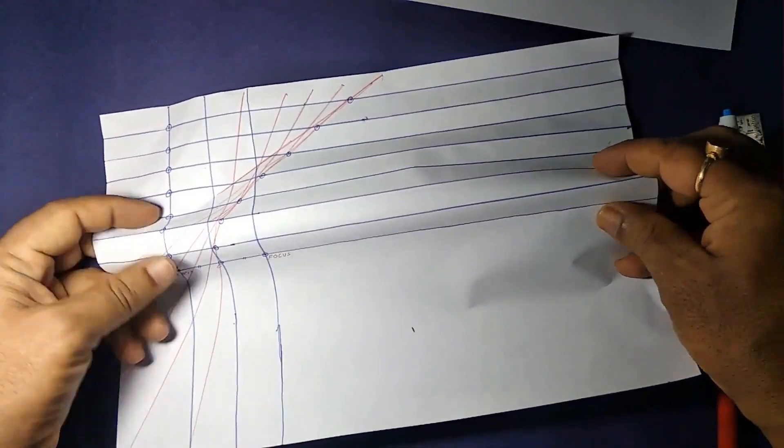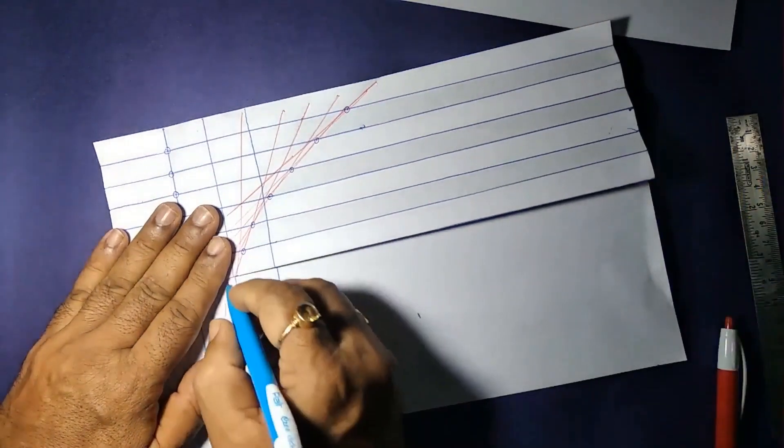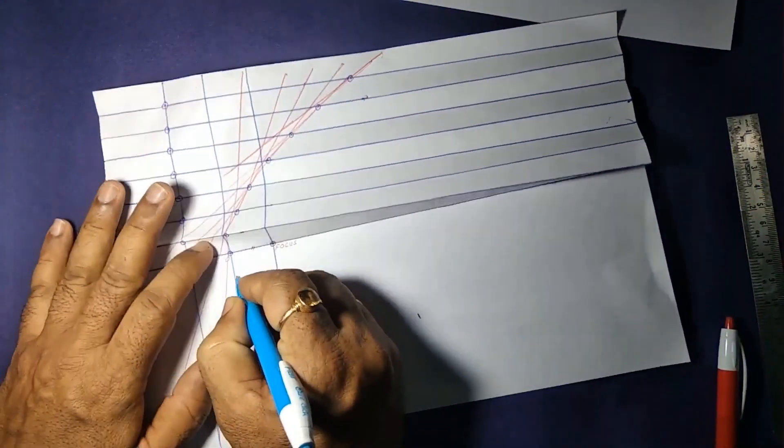And in this method, to make it more visible, we are marking with a pen. And getting the points for the lower part of the parabola.